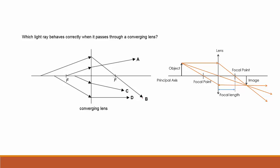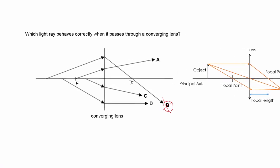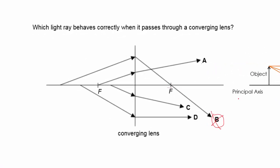We look at part B. You find that B is not the answer because as the light ray passes through F, the focal point, it must be parallel to the principal axis. So B is not the correct answer.